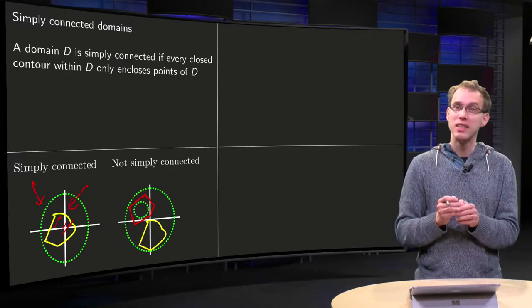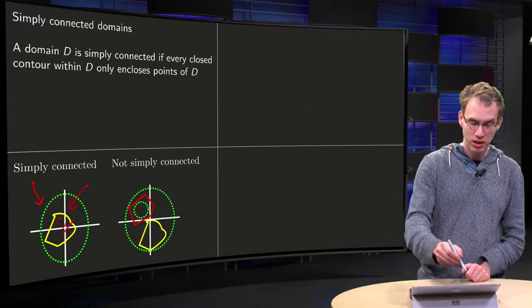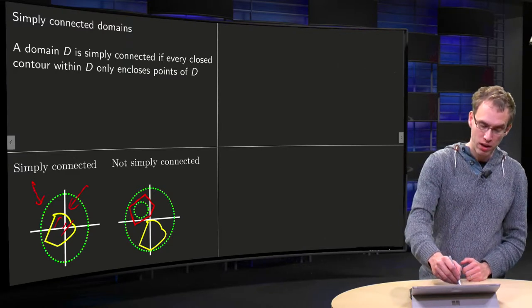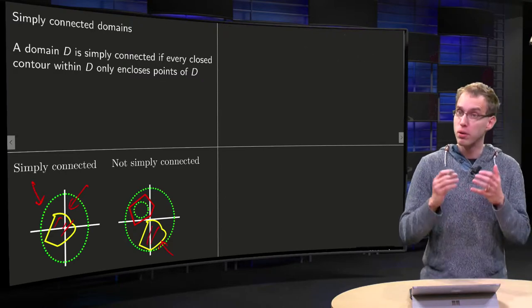Any closed contour will only enclose points of D. Then we look at the second region, the second egg where some small part is missing, as you see. Well, we can draw the same contour, the yellow one over here. And there we are fine, because inside the yellow one there are only points of D.